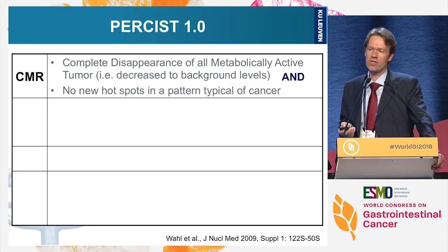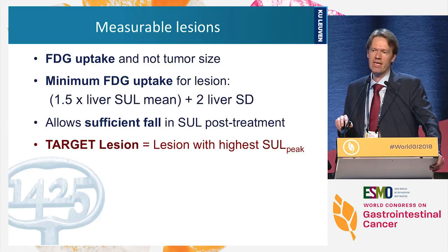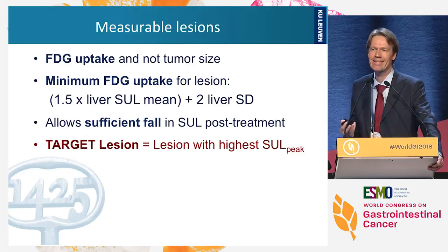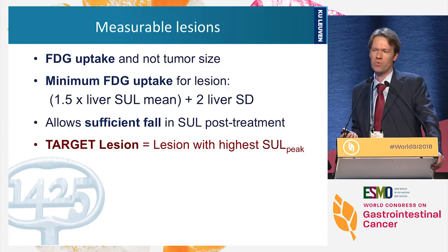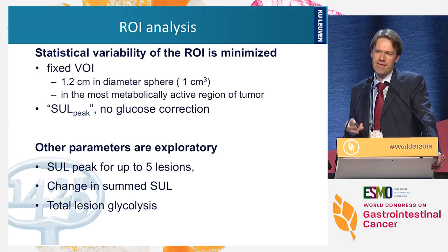In PERCIST, progressive disease is defined as a 30% increase in SUL peak and at least 0.8 SUL units, or a 75% increase in volume, or new lesions typical for cancer. Stable metabolic disease is none of the three other categories. Measurable lesions require a minimum FDG uptake of 1.5 times the liver plus two standard deviations to allow sufficient margin for decrease assessment. The target lesion is the one with the highest SUL peak at baseline.